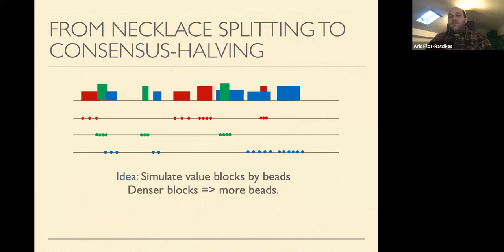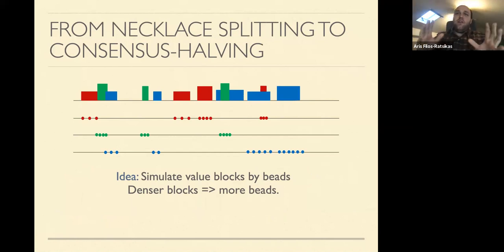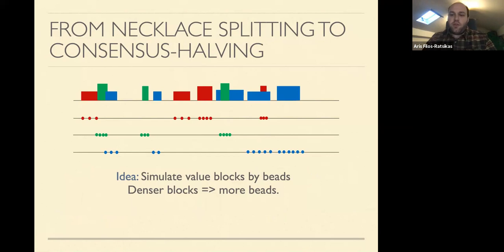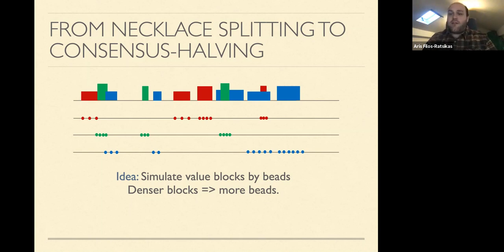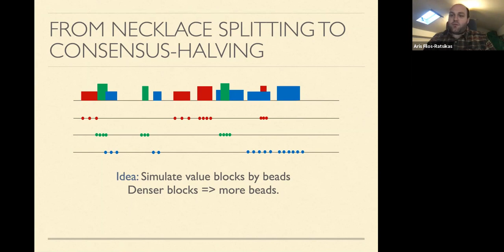We can also go the other way: prove that a solution to epsilon consensus halving exists by constructing a solution for necklace splitting. The rough idea is to simulate every valuation block with a number of beads — the denser the block, the more beads — solve necklace splitting, and use those cuts to get an approximate solution to consensus halving. Two things to remember: first, valuation functions must be piecewise constant; second, the approximation parameter epsilon must be inversely polynomial in the input size. This will become relevant later.